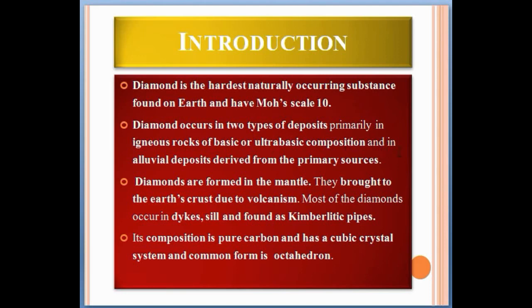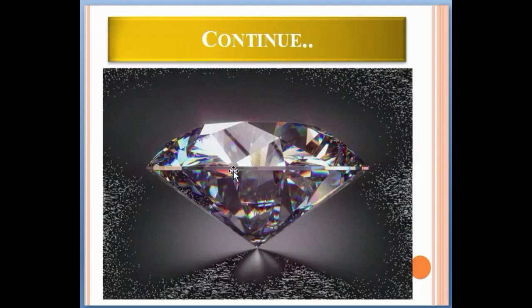Diamonds are actually formed in the mantle and are brought to the Earth's crust due to volcanism. Most diamonds occur in dykes and sills and are found as kimberlite pipes. The composition is pure carbon with a cubic crystal system, and the common form is the octahedron — this is the typical shape of a diamond, as seen here.